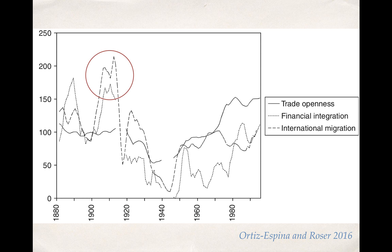A second extraordinary thing to note: this was a time of intense trade and migration openness. By most measurements, the world was considerably more globalized in 1910 than it is today, particularly in terms of financial integration and international migration. There were a lot more migrants, a lot more trading of money back and forth across borders, and levels of trade openness were almost as high during the 1910s as in the 2000s. It was an era of extraordinary openness.